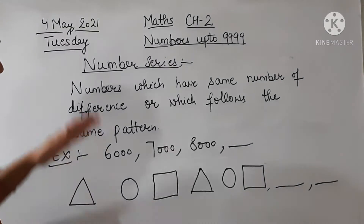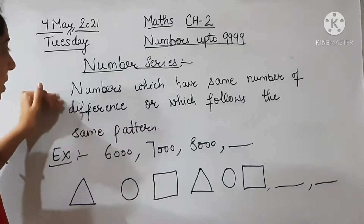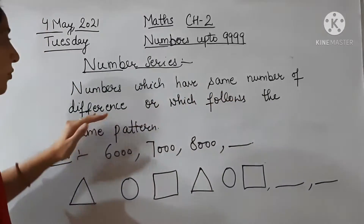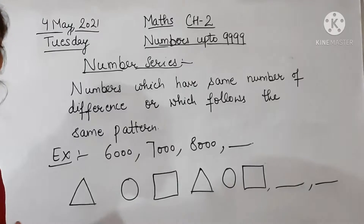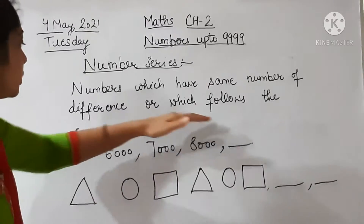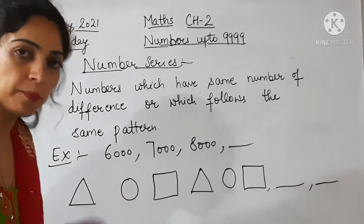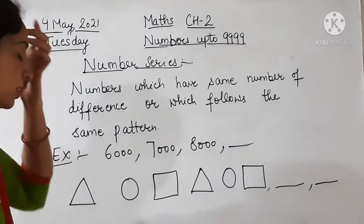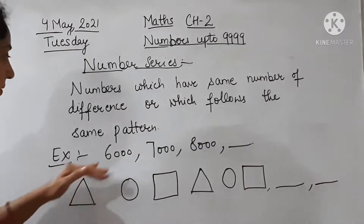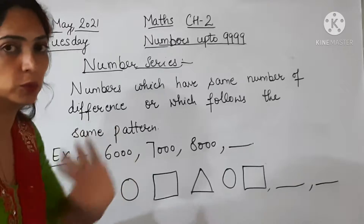So what is a number series? Number series kya hota hai? Numbers which have the same number of difference — wo numbers jinke andar same number of difference hoga — and which follow the same pattern. For example: 6000, 7000, 8000...